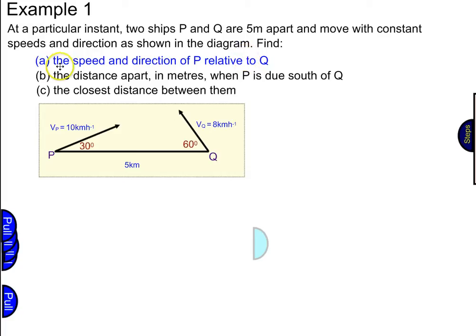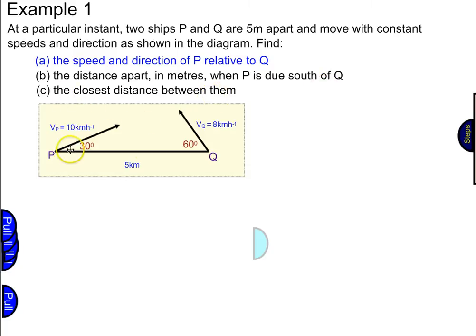There are three things we want to find. The first is the speed and direction of P relative to Q — that's what P appears to be doing to Q as an observer. The second is the distance apart in metres when P is due south of Q. Finally, we want to find the closest distance between them as P and Q are travelling.